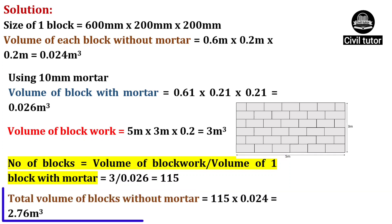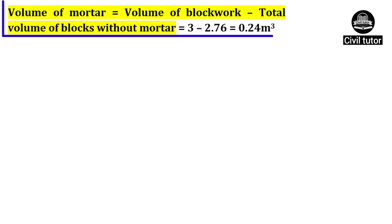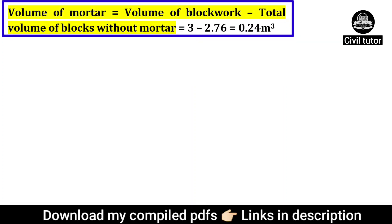The total volume of blocks without mortar will be equal to number of blocks multiplied by volume of one block without mortar, which is already calculated as 0.024 cubic meters, and the total will be 2.76 cubic meters. The volume of mortar will be equal to volume of total block work minus total volume of blocks without mortar. Volume of block work is 3 cubic meters and total volume of blocks without mortar is 2.76 cubic meters. Hence, volume of mortar will be equal to 0.24 cubic meters.